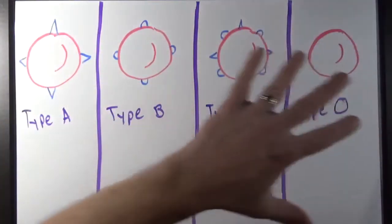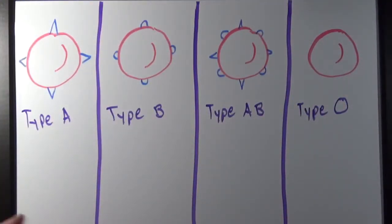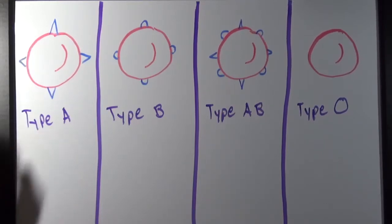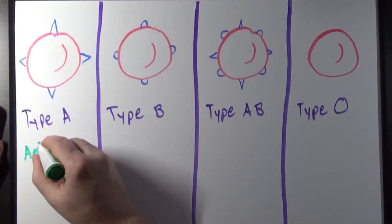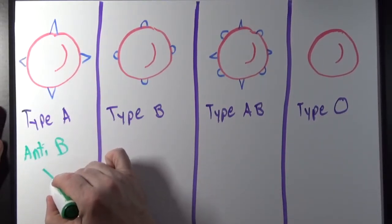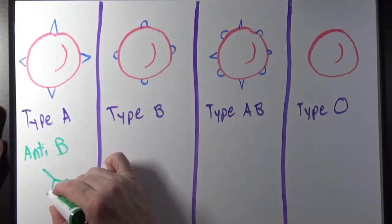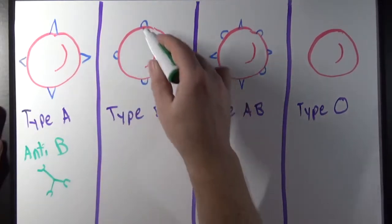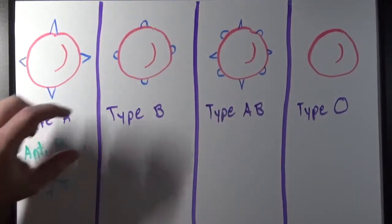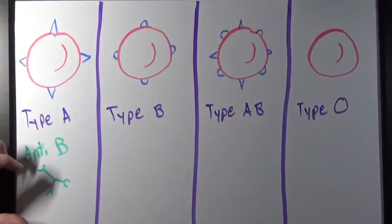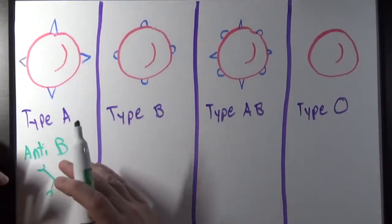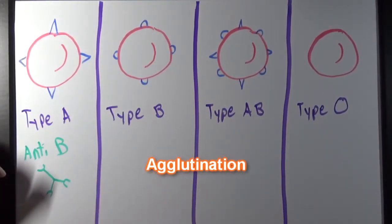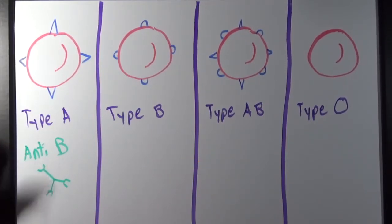I've drawn the red blood cells in each individual person's blood sample, but I haven't drawn any of the antibodies in the plasma yet. A person with type A blood is going to have anti-B antibodies. Those anti-B antibodies have rounded binding sites so they can bind to the surface antigens on the type B cells. If we were to take some type B cells and put them in this person's blood, these anti-B antibodies would bind to the surface antigens, cause clumping or agglutination, and promote the destruction of those cells. That means we cannot transfuse type B blood cells into a person with type A blood.